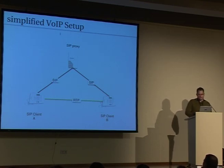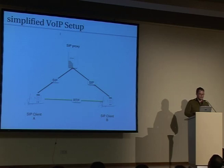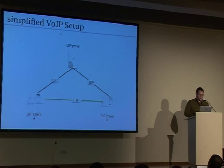So how does a simplified VoIP setup look like? You've got one SIP proxy in the middle and two SIP clients. SIP client A tries to reach SIP client B and sends a SIP INVITE message to the SIP proxy, which then just forwards the message to the second phone. But once you've exchanged all the messages, your voice data flows directly between those two clients, just to keep bandwidth away from the proxy, reduce latency, and make it work.